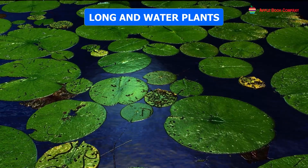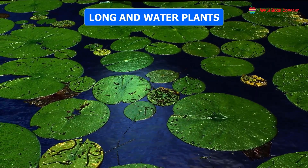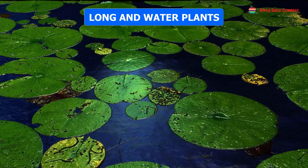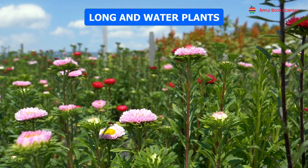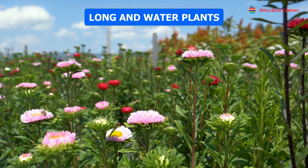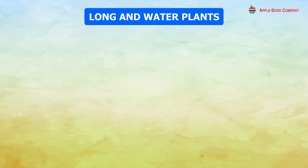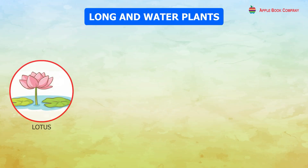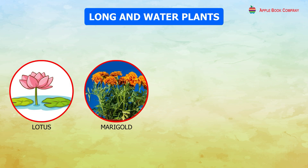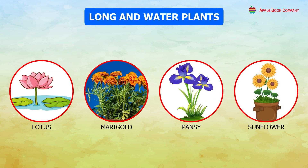Many plants bear flowers. Flowers are of different colors, shapes and sizes. For example, lotus, marigold, and sunflower are all plants with flowers.